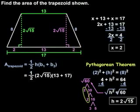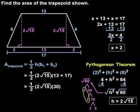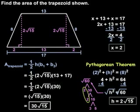Order of operations then tells us to simplify inside the parentheses first. So 13 plus 17 is 30, and we have 1 half times 2 root 15 times 30. 1 half times 2 root 15 is 1 root 15, or just root 15. So we have root 15 times 30, or 30 root 15. So the area of the trapezoid shown is 30 root 15.